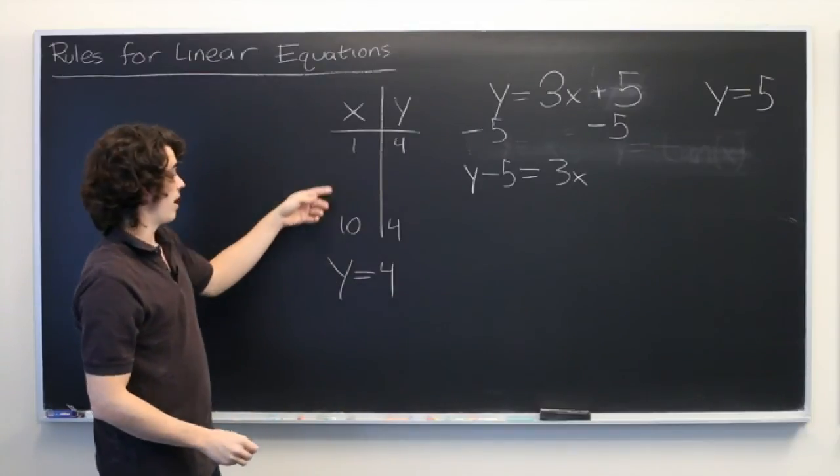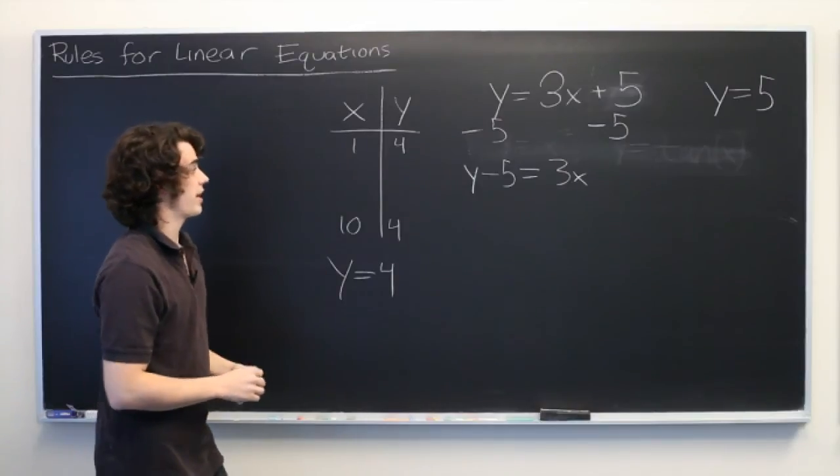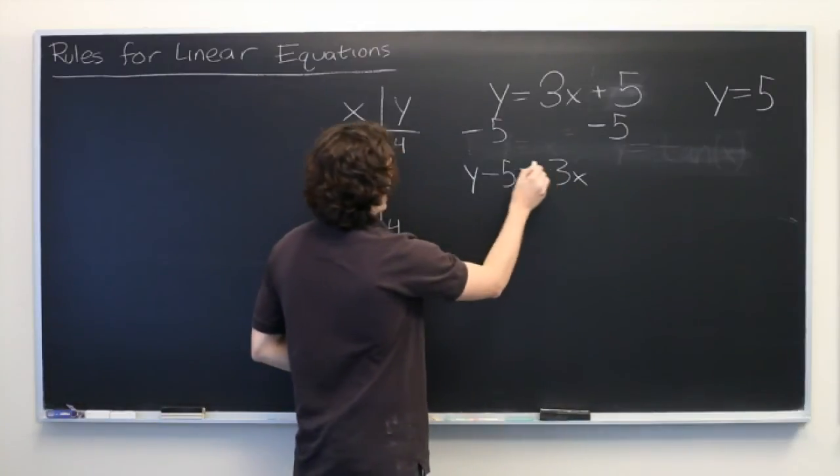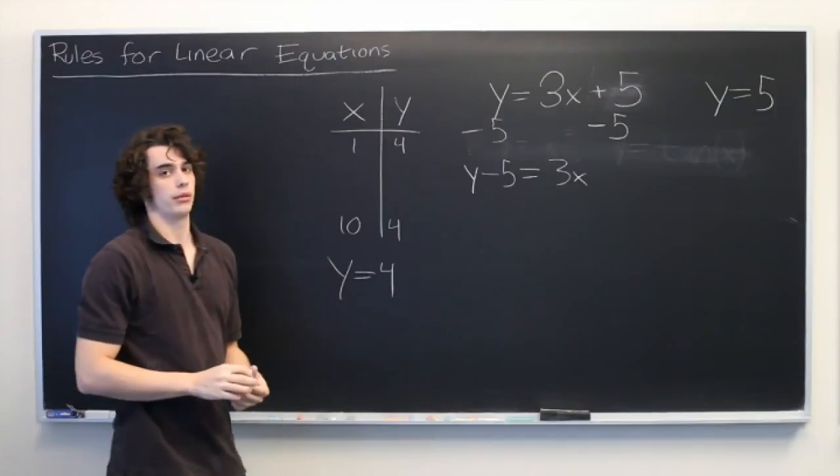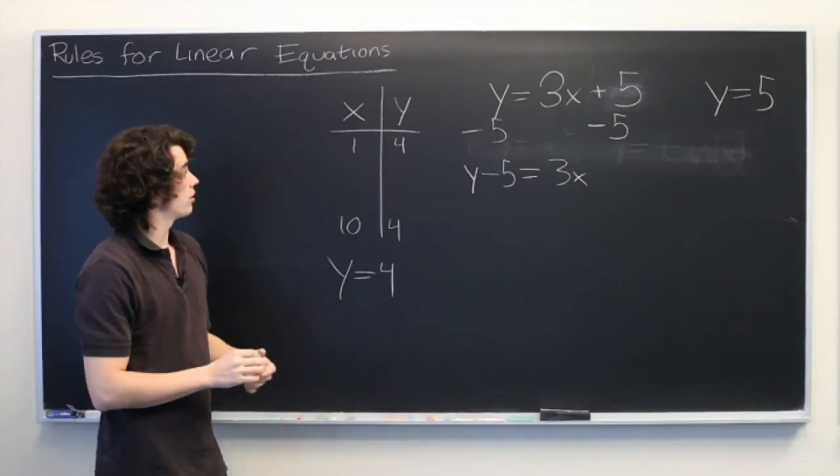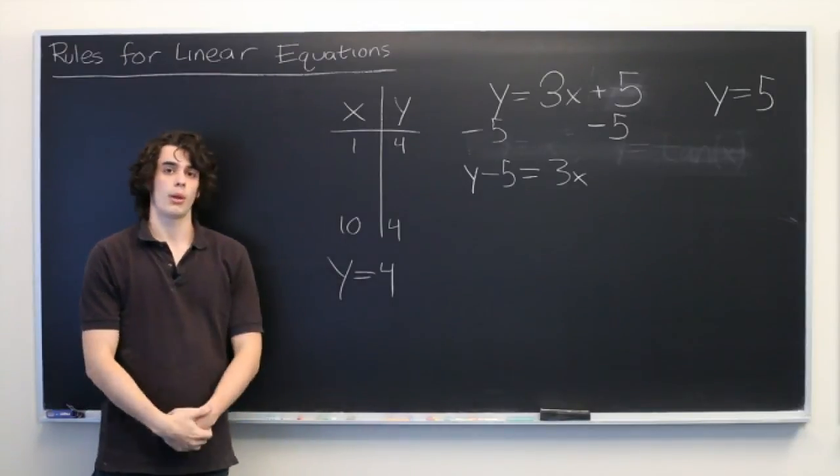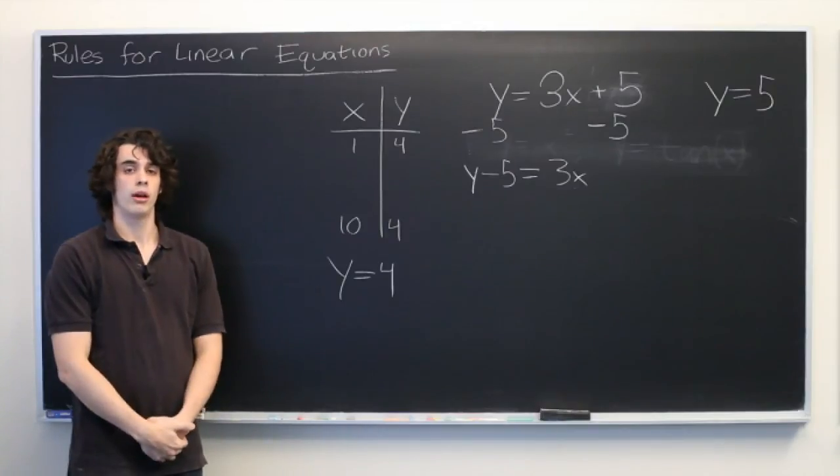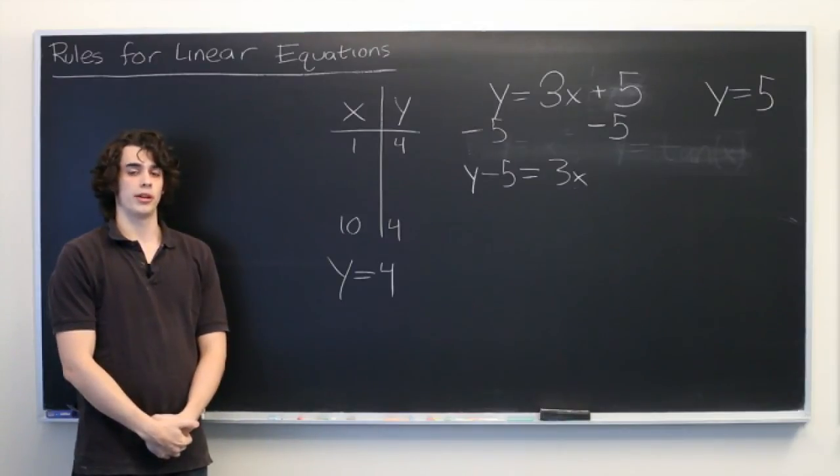So, you've probably made an error somewhere along the line because every input value has exactly one output value associated with it. And those are the rules for linear equations. Once again, my name is Ryan Molloy and we've just discussed rules for linear equations.